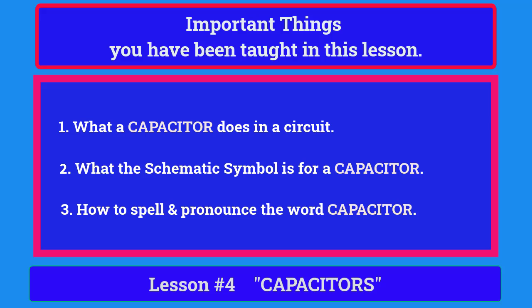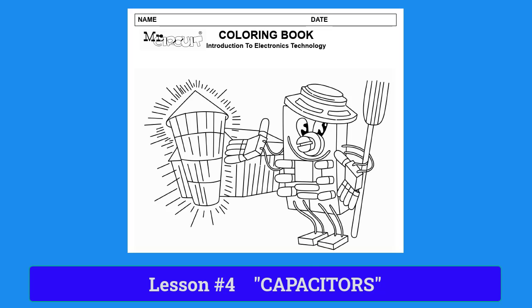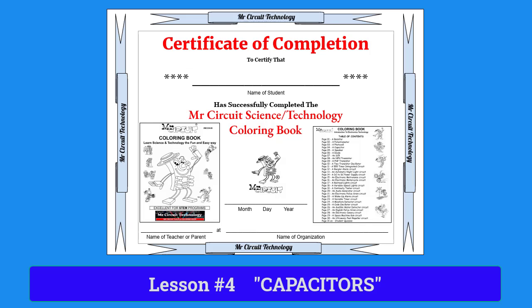Now to finish this lesson, please color in the Mr. Circuit robot. Remember, when you complete all 30 lessons, you will receive a Certificate of Completion.